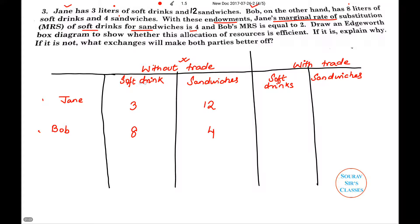With these endowments, Jane's marginal rate of substitution of soft drinks for sandwiches is four, because for one unit of soft drink she is willing to give away four units of sandwiches. Bob's marginal rate of substitution is equal to two. We need to draw an Edgeworth box diagram to show whether this allocation of resources is efficient.